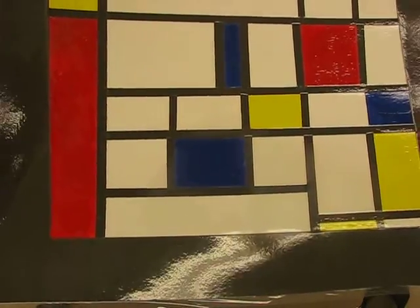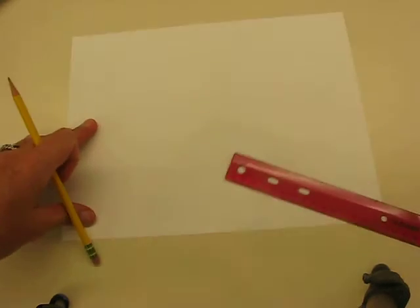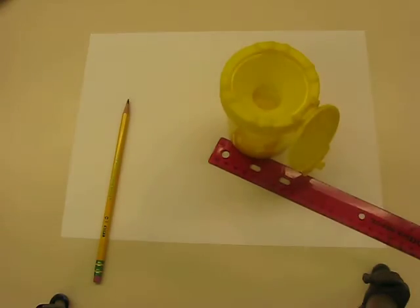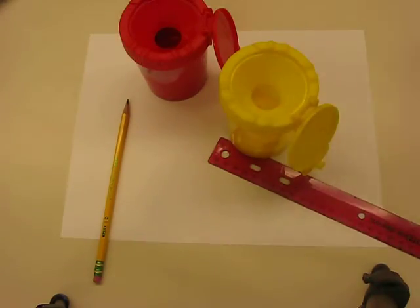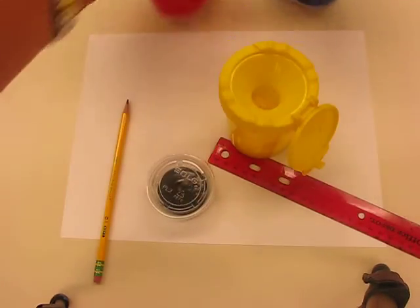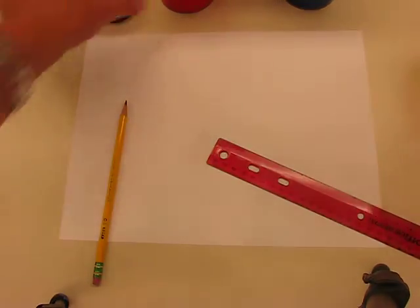So I'm just going to put this little example to the side. Every one of you are going to get a sheet of white paper and a ruler, sharp pencil, and you're going to get primary colors: yellow, red and blue with some black as well. So we're going to use the same colors that Piet Mondrian used himself.